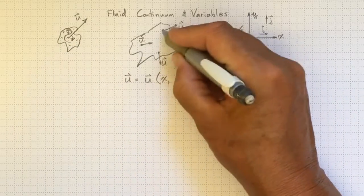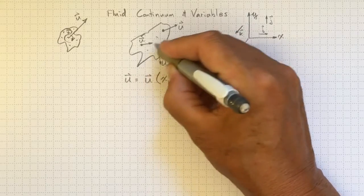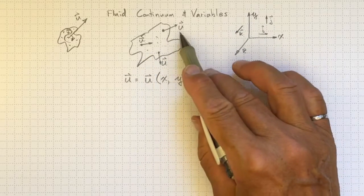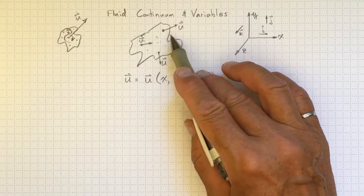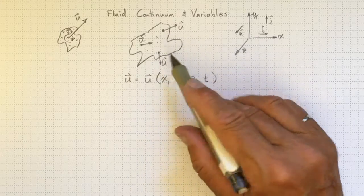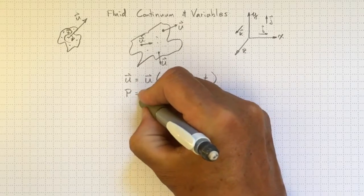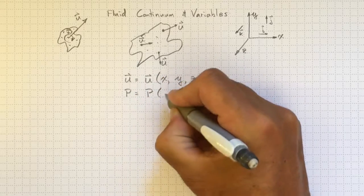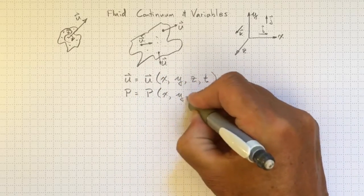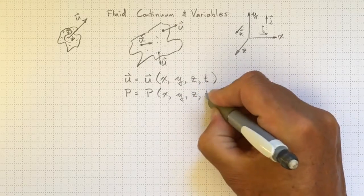Likewise, at all these different locations, we could have a different pressure within the fluid that will be exerting a pressure force to drive it in one direction or another. So we'll also have a pressure field P which is also a function of location x, y, z, and time.